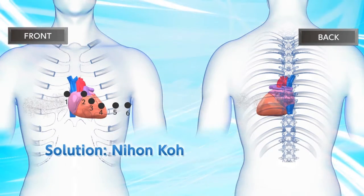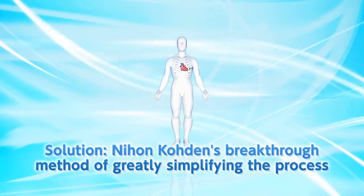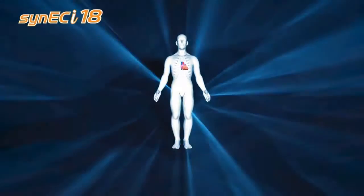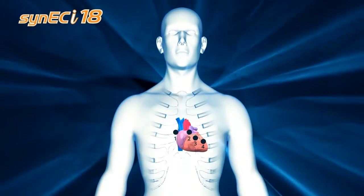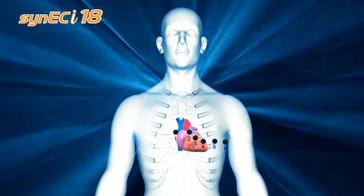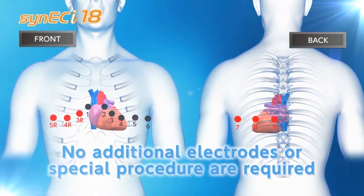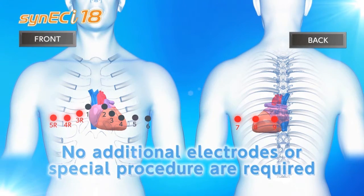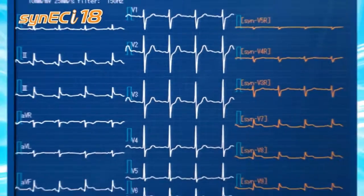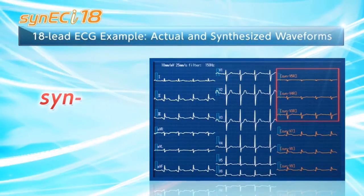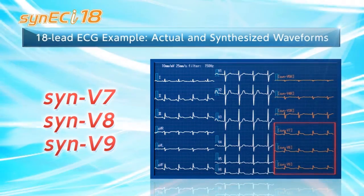To solve this problem, Nihon Koden has worked with leading cardiologists to develop a breakthrough method of greatly simplifying the process — this is Cinec Eye. Cinec Eye uses only standard resting ECG electrode placement to accomplish its task. No additional electrodes or special procedures are required. Simply perform a standard 12-lead ECG and get immediate access to the synthesized leads of the right ventricle and posterior wall. Here is an example of synthesized 18-lead waveforms: six synthesized lead waveforms at the right, and standard 12-lead ECG waveforms at the left and center.